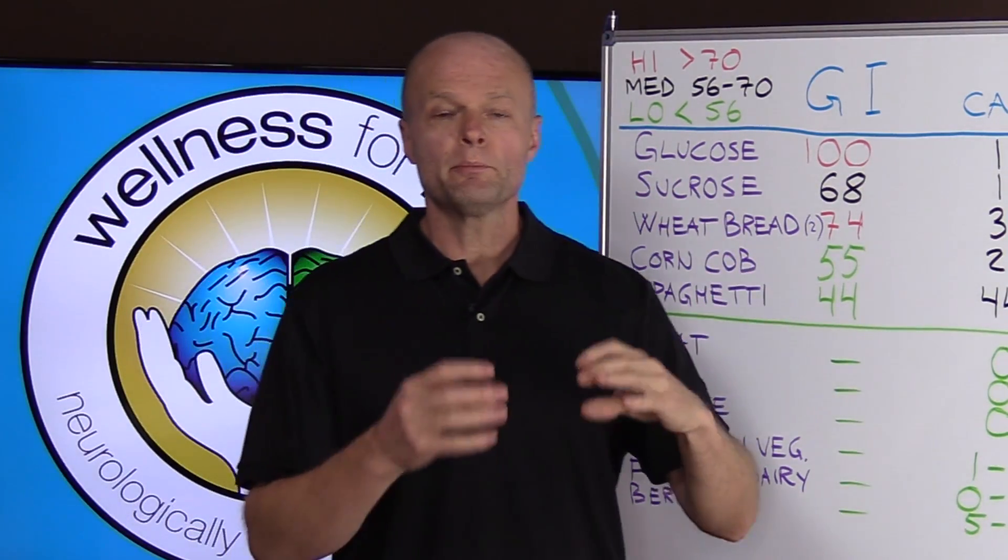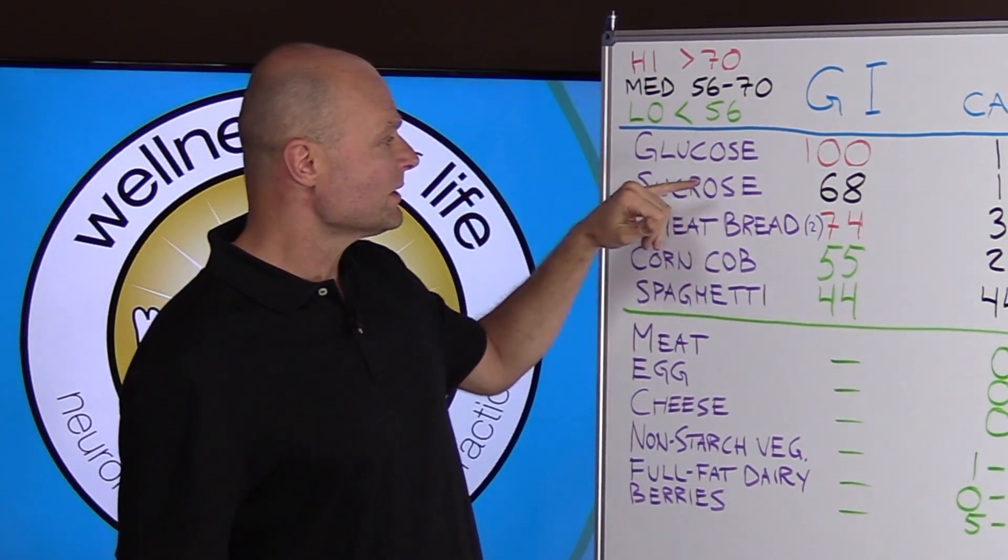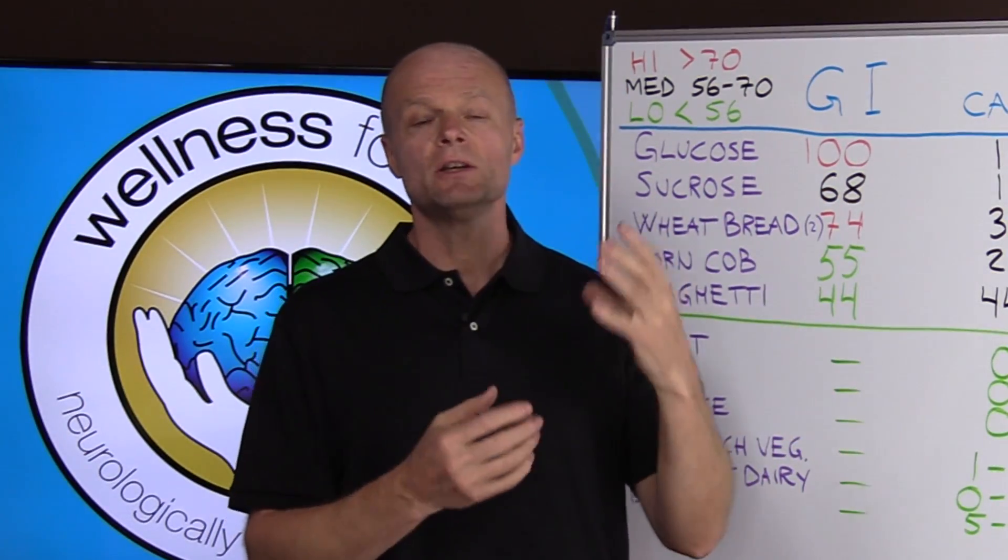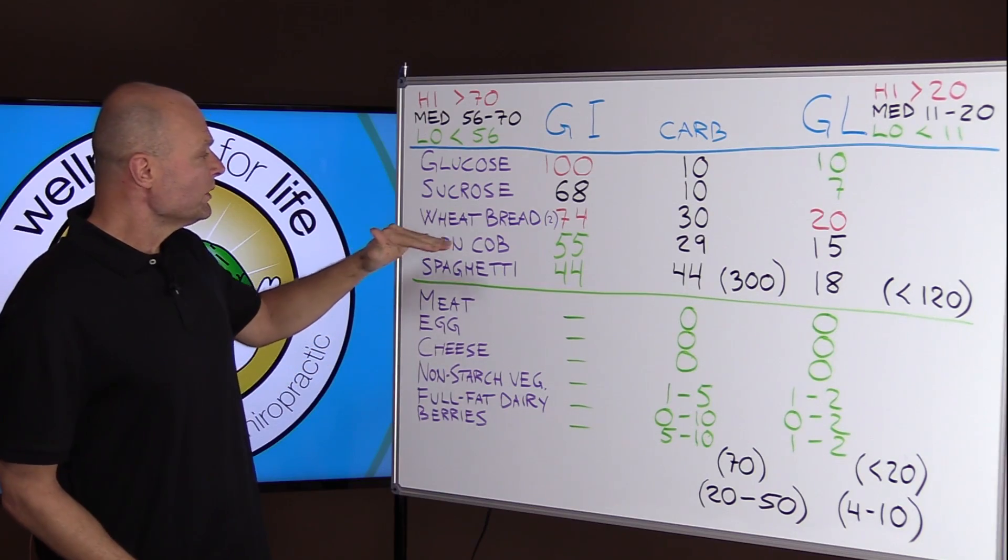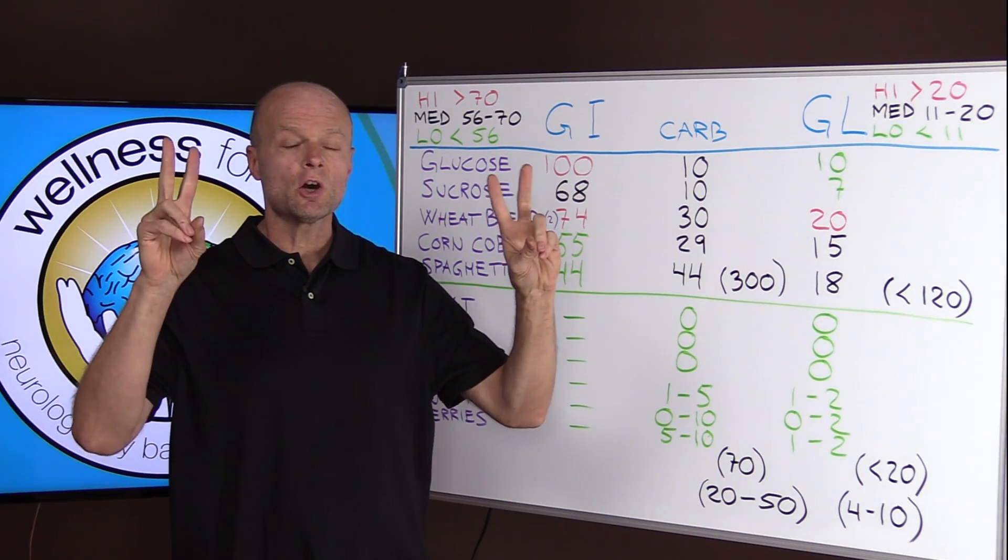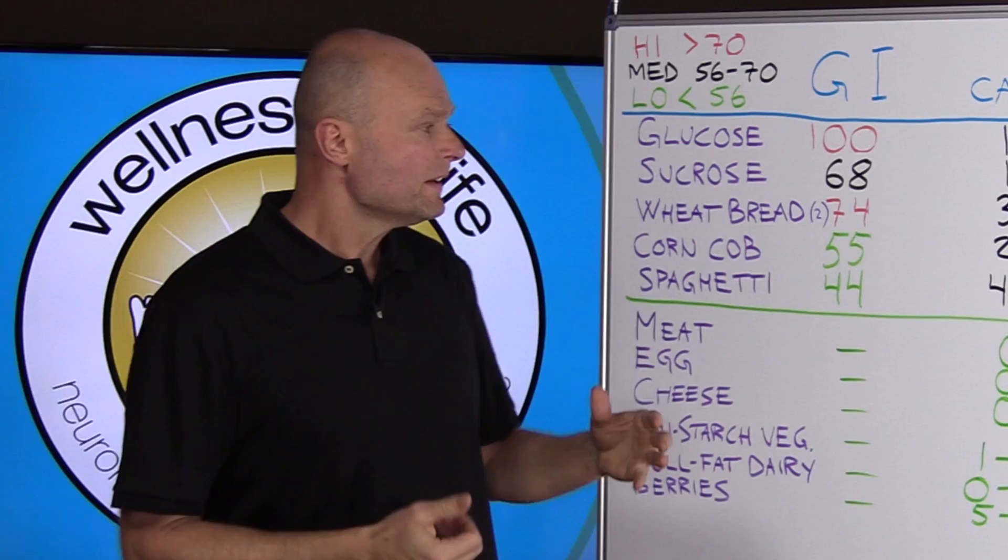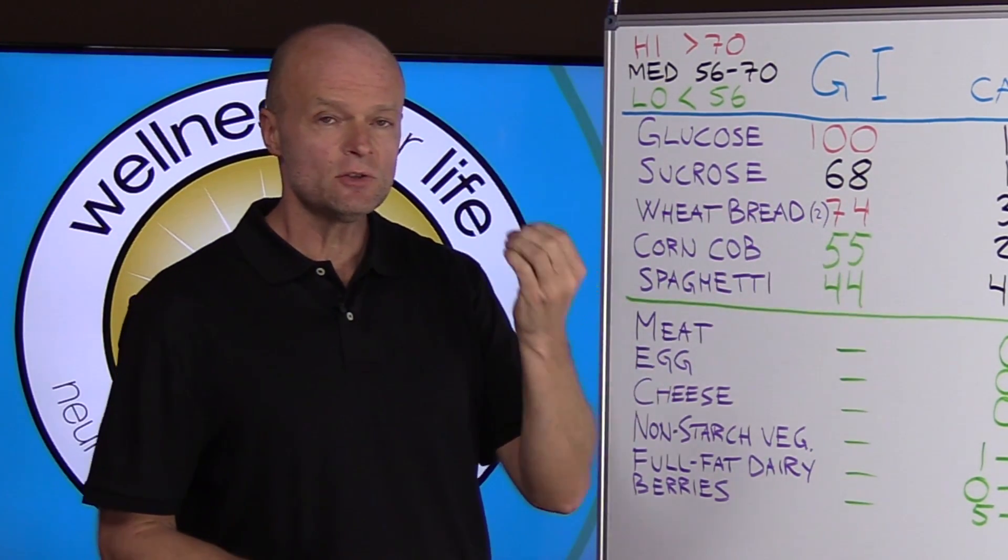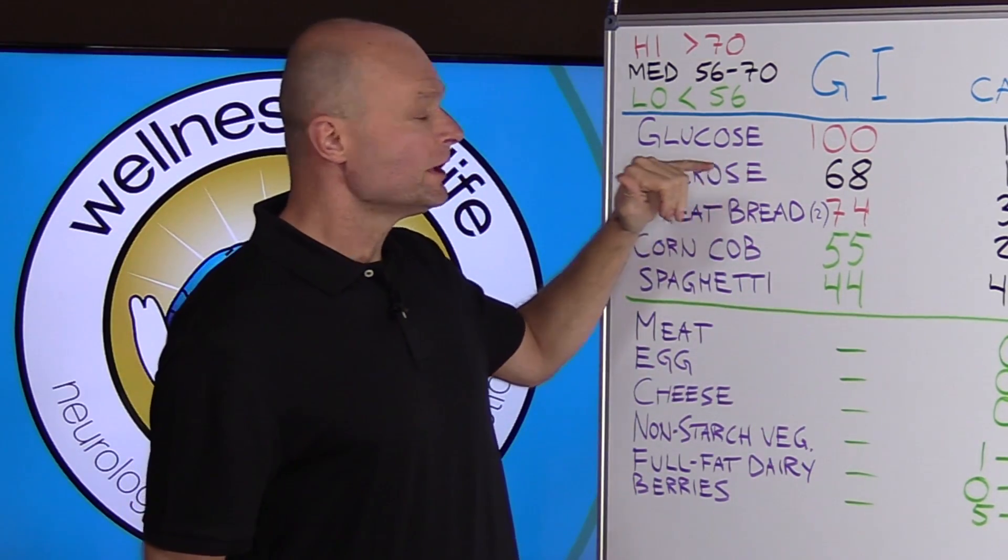Based on that reference, sucrose or pure white table sugar is 68. So that's absorbed slower because it's a component, it's a combination of glucose and fructose. Now when we look at wheat bread, that some people say is a complex carbohydrate and therefore absorbed slowly, we find that wheat bread is absorbed faster.